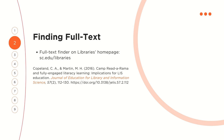I'll start off today by going over how to find full text of articles. If you have a citation of an article — maybe one that was given to you as a course reading, or one you found through Google Scholar or in a references list of another article — you can track down the PDF through the library's full text finder.